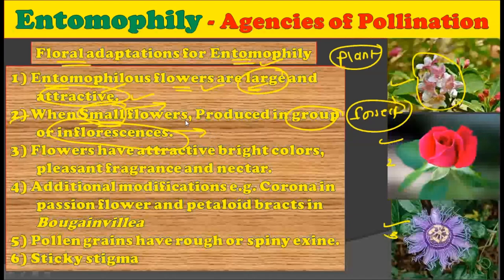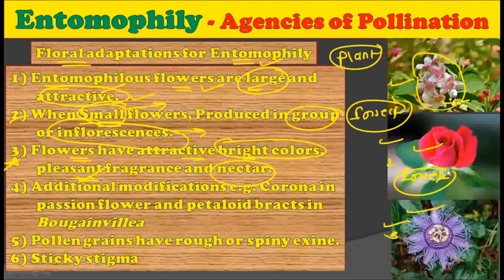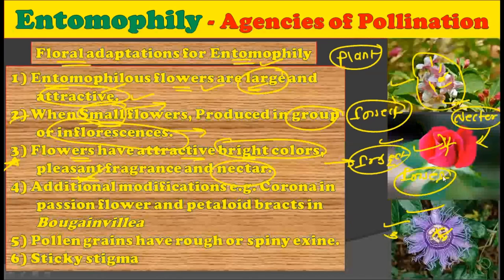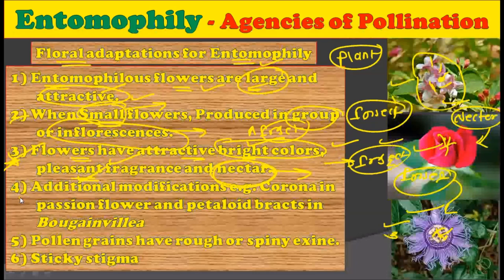The flowers have attractive bright colors, pleasant fragrance, and nectar. Entomophilous flowers are very bright colored and have very pleasant fragrance — remarkable enough to attract insects from kilometers away. These flowers also contain nectar, and due to the presence of nectar the insects land on every flower to collect it. In the process of getting nectar, insects transport pollen grains from one flower to another.